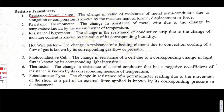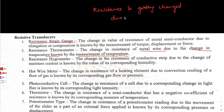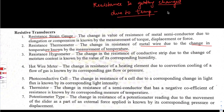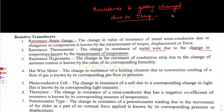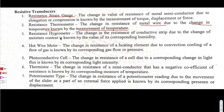The resistance thermometer: the change in resistance of a metal wire due to change in temperature is used for measurement of temperature. Resistance is directly proportional to temperature, so the resistance changes due to temperature, and we observe this change and convert it into an electrical signal.